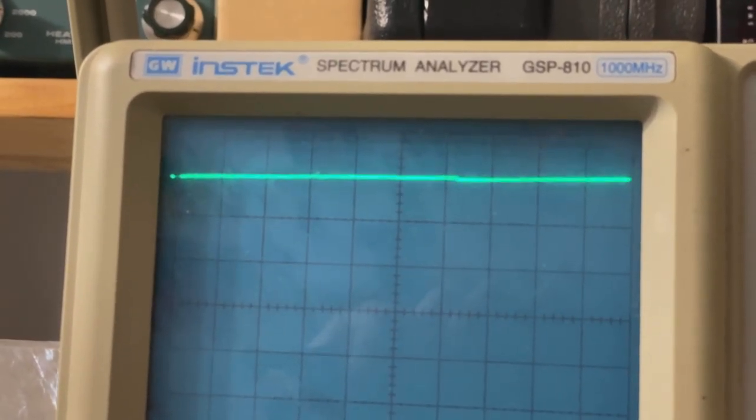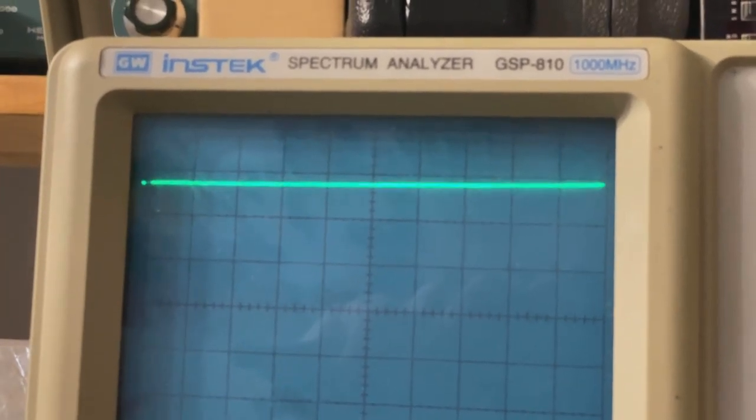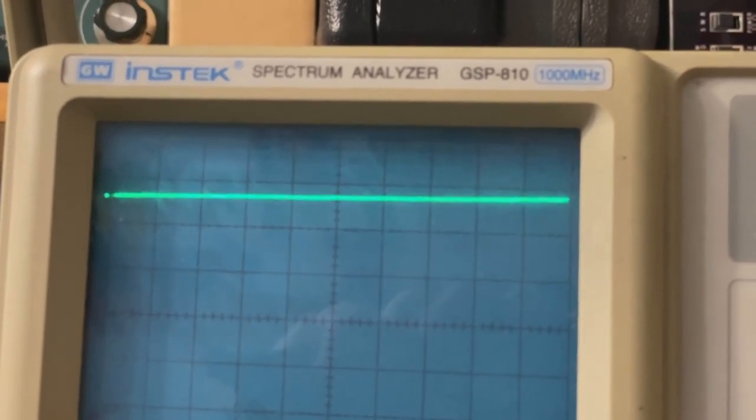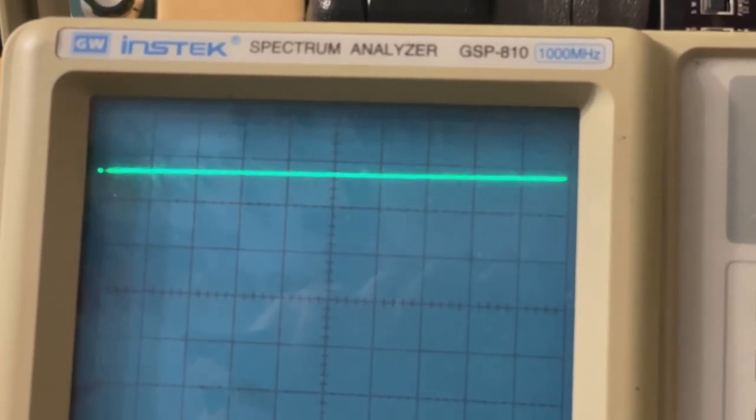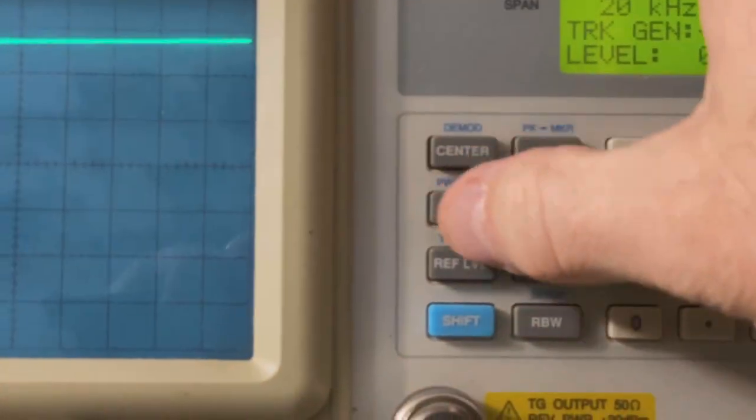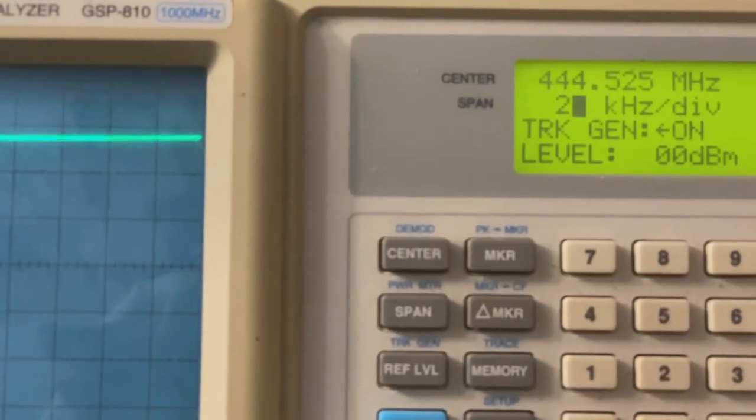Now I'm going to dial it back up to 444.525, which is what I was doing before, and you can see there's a little over 10 dB of attenuation. Now I'm going to change the span here to show you the entire spectrum.